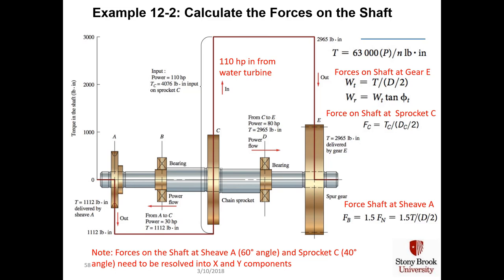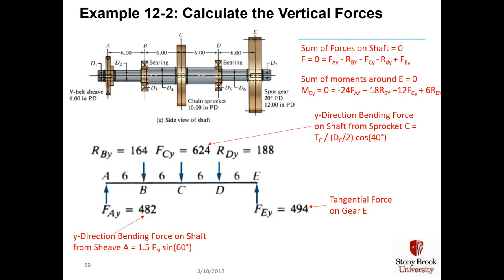The sprocket force is just the torque divided by the diameter over 2. The force on the shaft at shiv A is 1.5 times the normal force of the shiv, because this is a V-belt drive — equal to 1.5 times the torque at A divided by the diameter over 2. Note that forces on the shaft at shiv A and sprocket C will need to be resolved into Y components (vertical direction) and X components (in and out of the page).